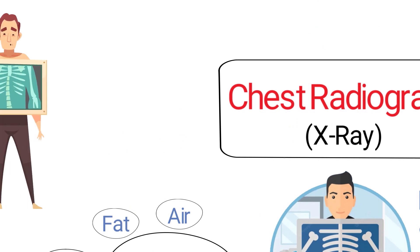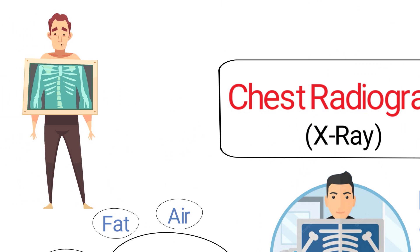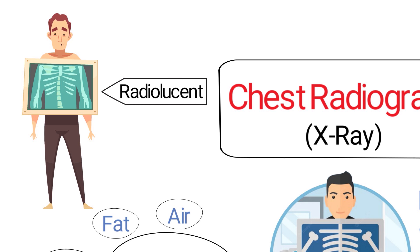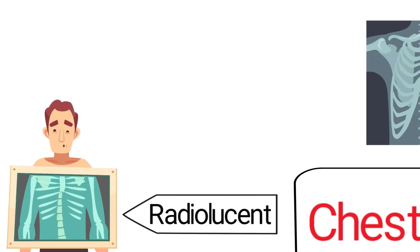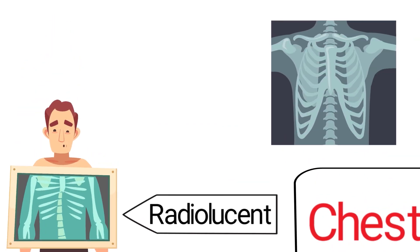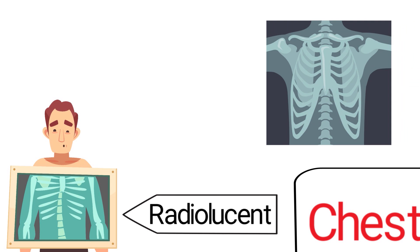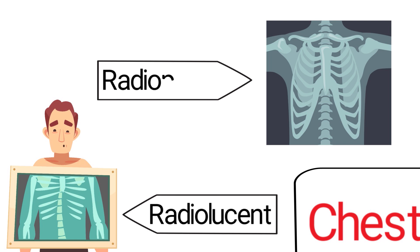Lungs that are filled with air have a black appearance on the chest X-ray, which is known as being radiolucent. Bones and fluid typically absorb more of the X-ray beams during the process and display more white on the chest X-ray, which is known as being radiopaque.